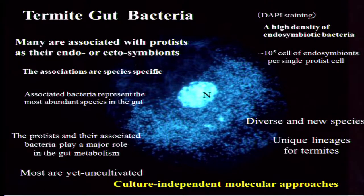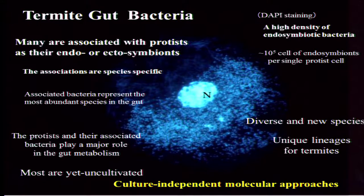Many of the gut bacteria are associated with protists as their endo- or ectosymbionts. The associations are species-specific, and associated bacteria represent the most abundant species in the gut. Therefore, the protists and their associated bacteria play a major role in the gut metabolism.